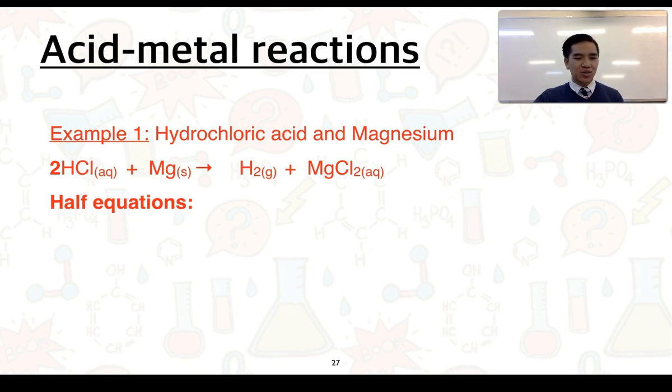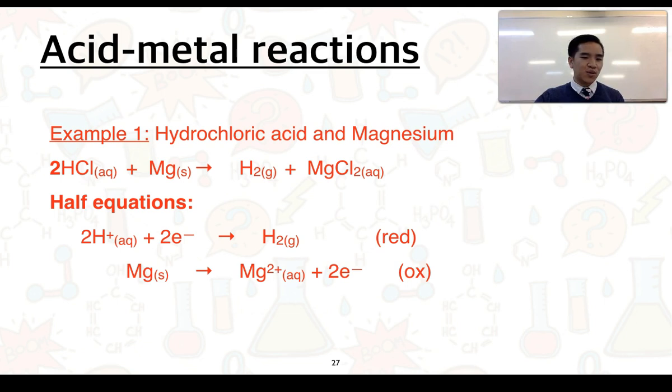Our half equations, the first one, we can see the hydrogen ion as part of the acid is the key component, and what we can see is that it's becoming reduced. It gains two electrons in total to form H2. So that's the reduction half equation. The oxidation half equation involves magnesium forming magnesium ions in solution, so magnesium solid forming Mg2+ in solution, and two electrons being lost.